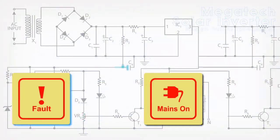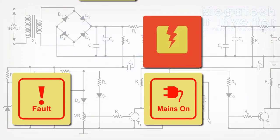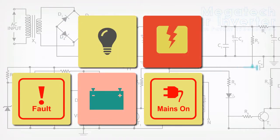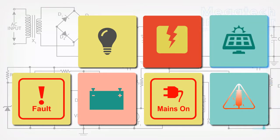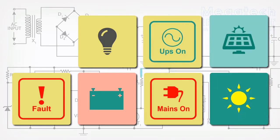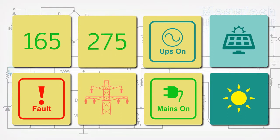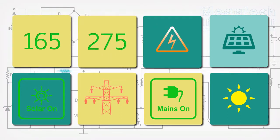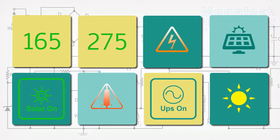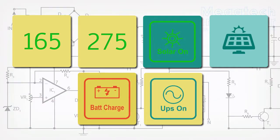Worried about constant fluctuations in power and your expensive gadgets at home? Worry no more. The Megatech Solar Ready UPS can safely operate within a very wide range of input voltages, so that when voltage falls below a level, the UPS will switch your supply to backup power automatically.